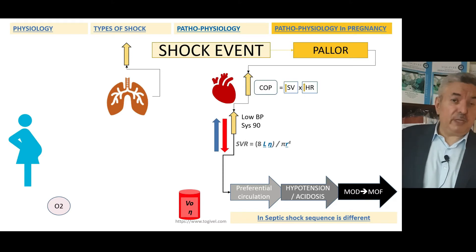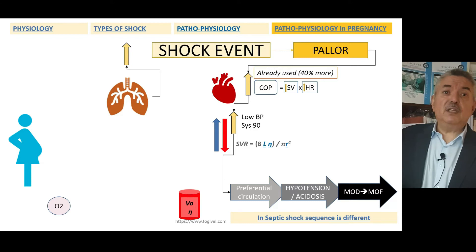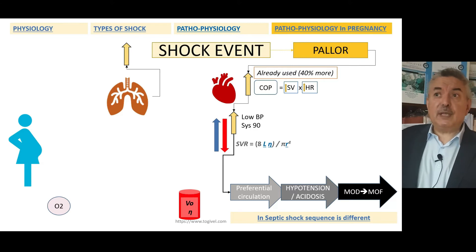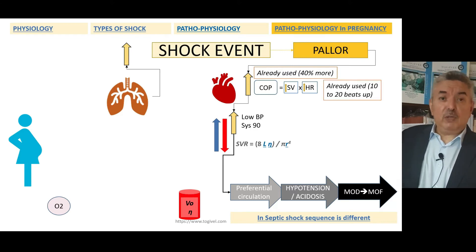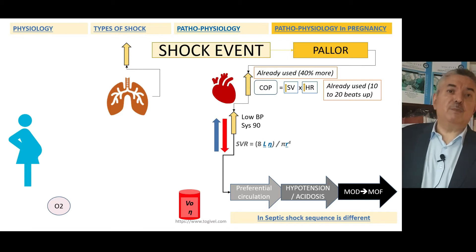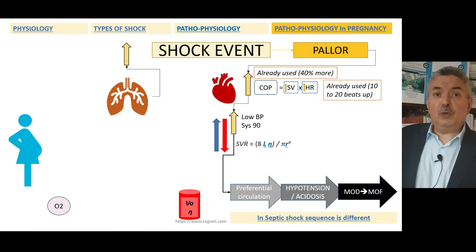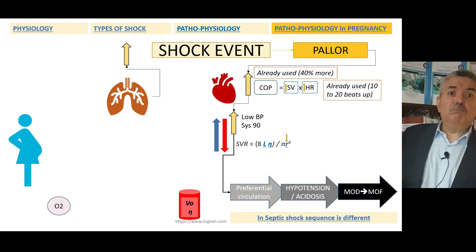If you want to increase cardiac output, you want to increase stroke volume — it's already increased by 40% or more. You want to increase the heart rate — it's already increased, with an increase of 15 beats per minute or more. So what do you want to do?